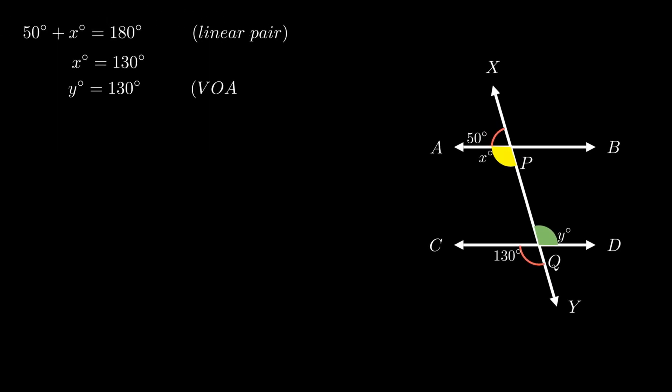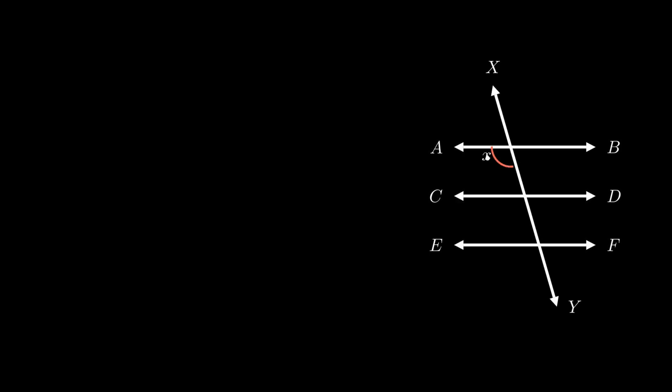Moving on to the second problem. The problem states that line AB is parallel to line CD and line CD is parallel to line EF. Let XY be the transversal subtending angles X, Y, and Z such that the ratio of angle Y to angle Z equals 3:7. We need to find the values of X, Y, and Z.